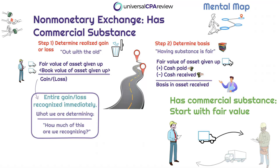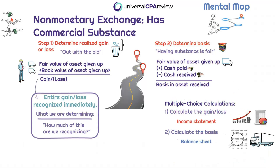We take the fair value of the asset given up and add any cash paid, then reduce it by any cash received. The assets exchanged don't necessarily have to have an equal fair value, so cash given or cash received within the exchange — commonly referred to as boot — can also be included. If boot is involved, it's almost always going to be one or the other: cash paid or cash received. Regardless of whether the transaction has commercial substance or lacks commercial substance, we're always focused on the asset that is given up.